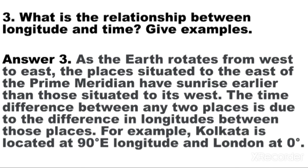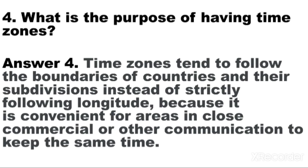Question number 3: What is the relationship between longitude and time? Give examples. Answer: As the Earth rotates from west to east, the places situated to the east of the prime meridian have sunrise earlier than those situated to its west. The time difference between any two places is due to the difference in longitudes between those places. For example, Kolkata is located at 90 degrees east longitude and London at 0 degrees. Question number 4: What is the purpose of having time zones? Answer: Time zones tend to follow the boundaries of countries and their subdivisions instead of strictly following longitude, because it is convenient for areas in close commercial or other communication to keep the same time.